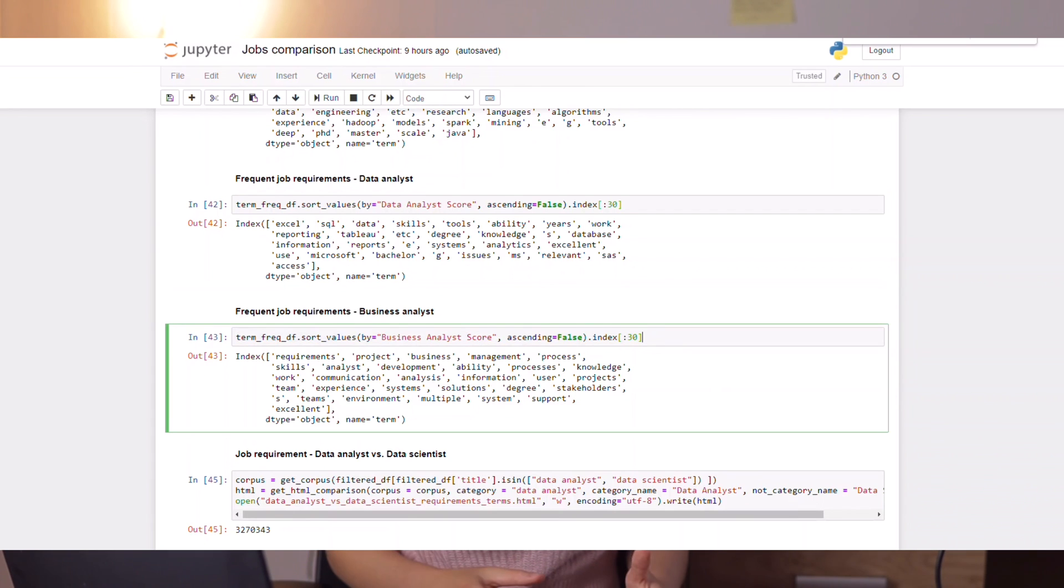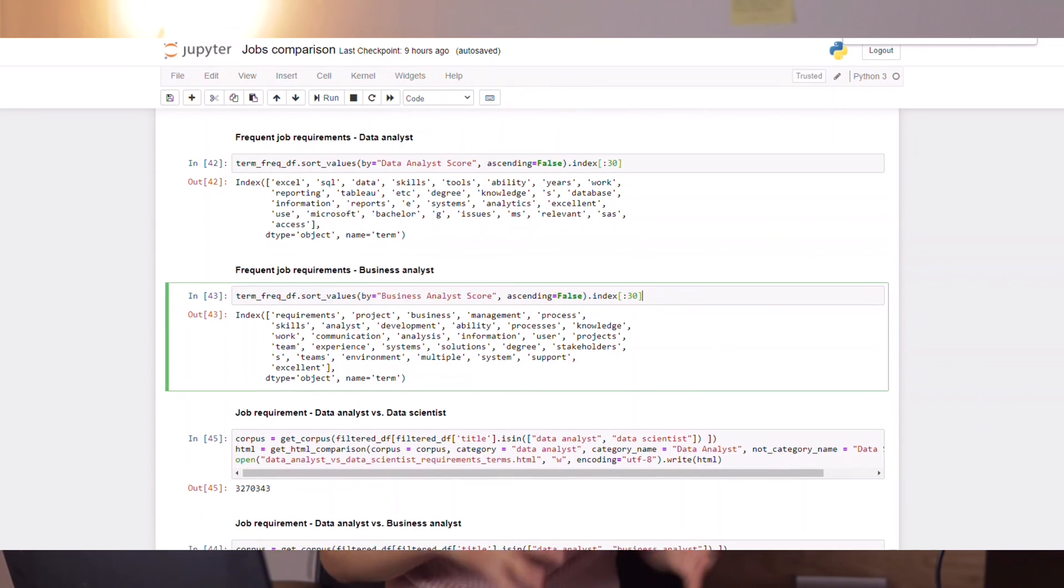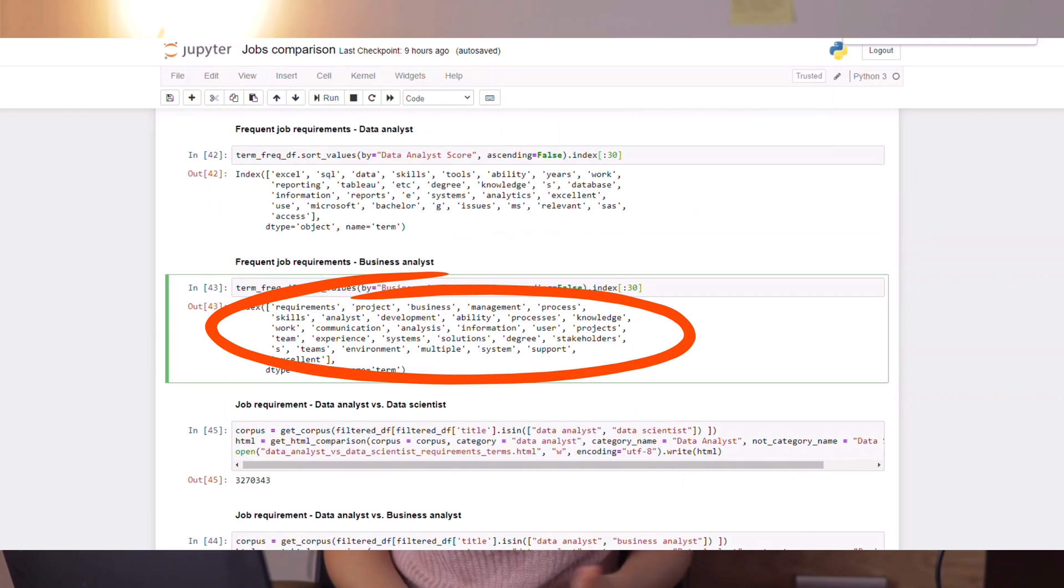If we look into business analysts, what are the frequent terms? We can see here they are much more related to business such as project management, process, development, communication, solutions, stakeholders. All the things are related to the business process and activities.